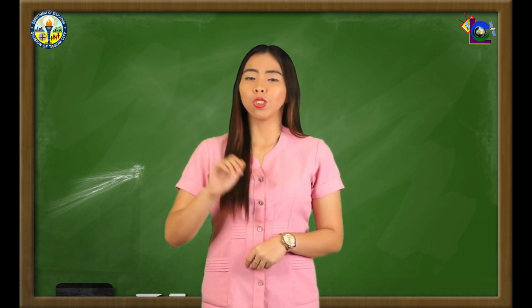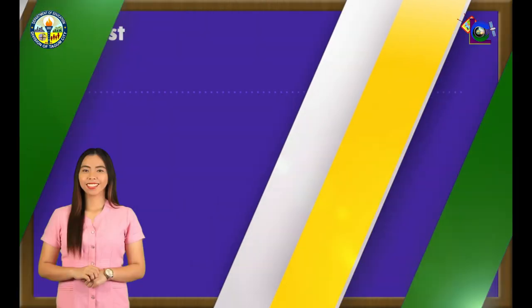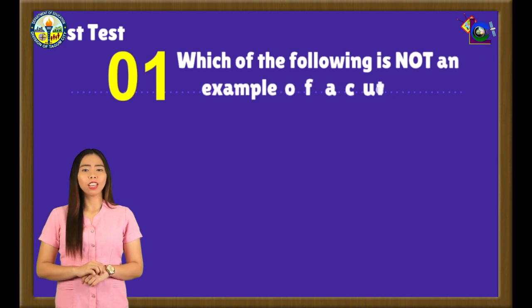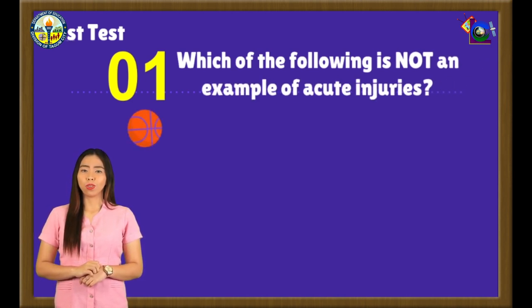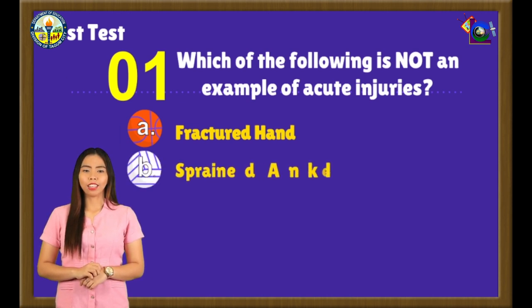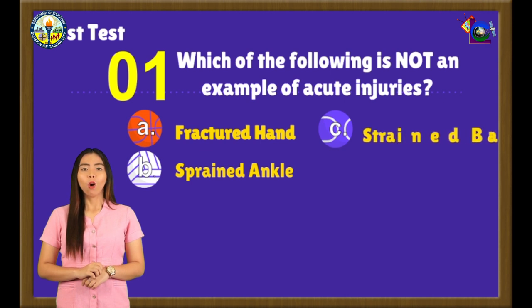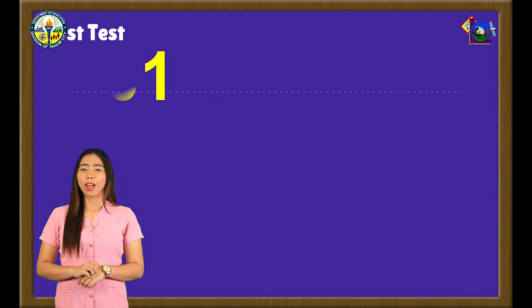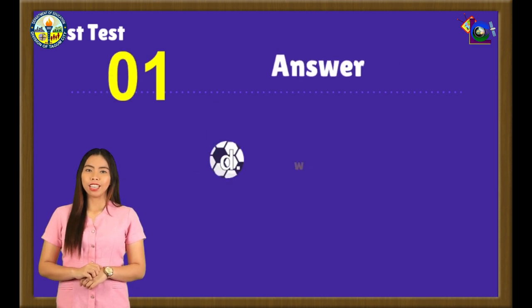Kindly get a 1/4 sheet of paper. We will be having our post-test. Choose the letter of the correct answer. You have 5 seconds to answer each item. Number 1: Which of the following is not an example of acute injuries? A. Fractured hand. B. Sprained ankle. C. Strained back. Or D. Wound. The correct answer is letter D: Wound.